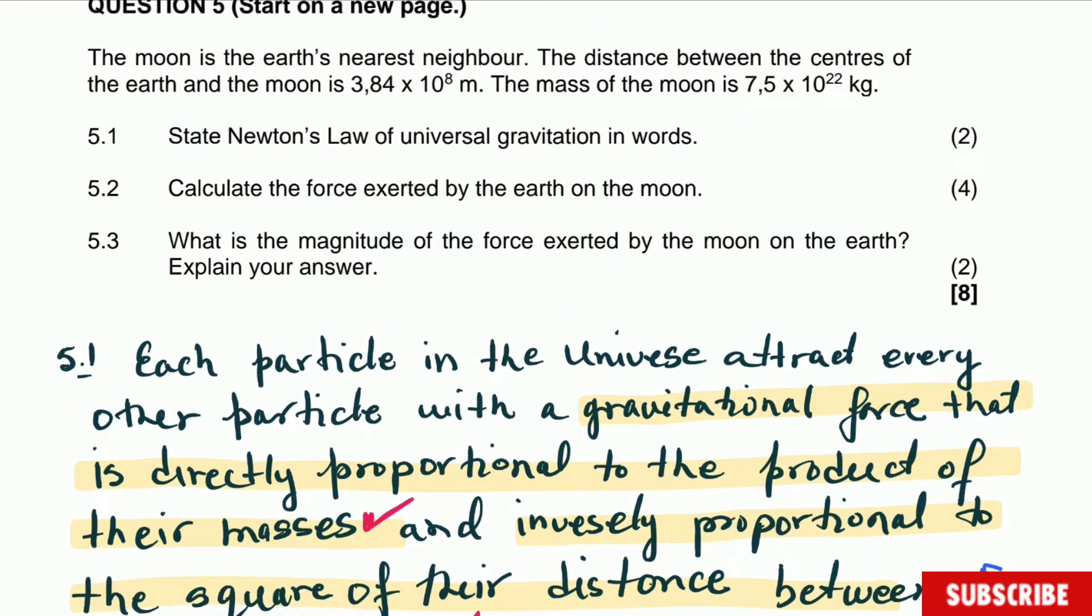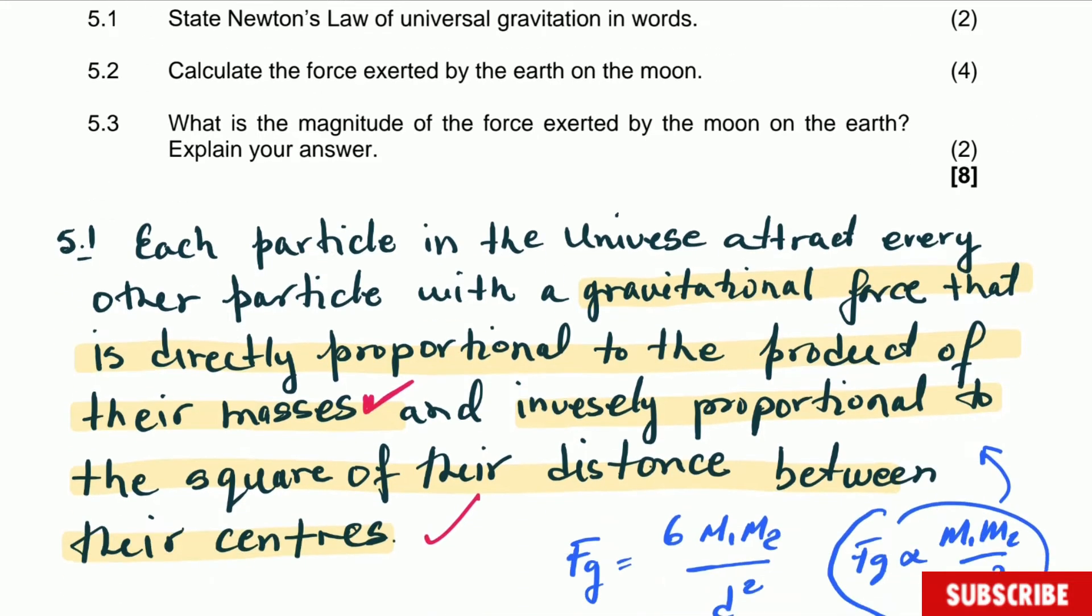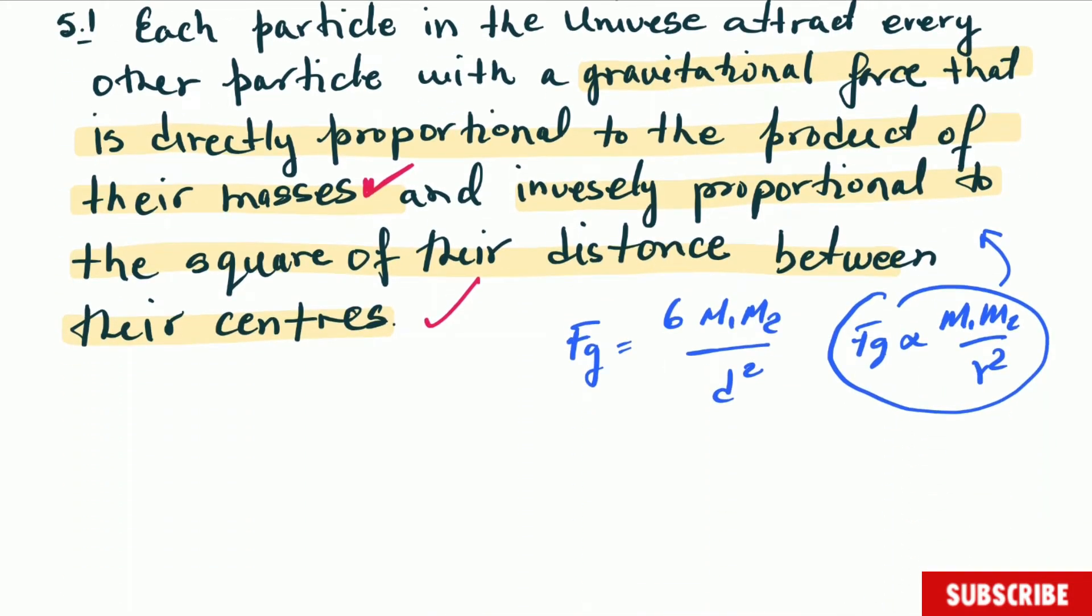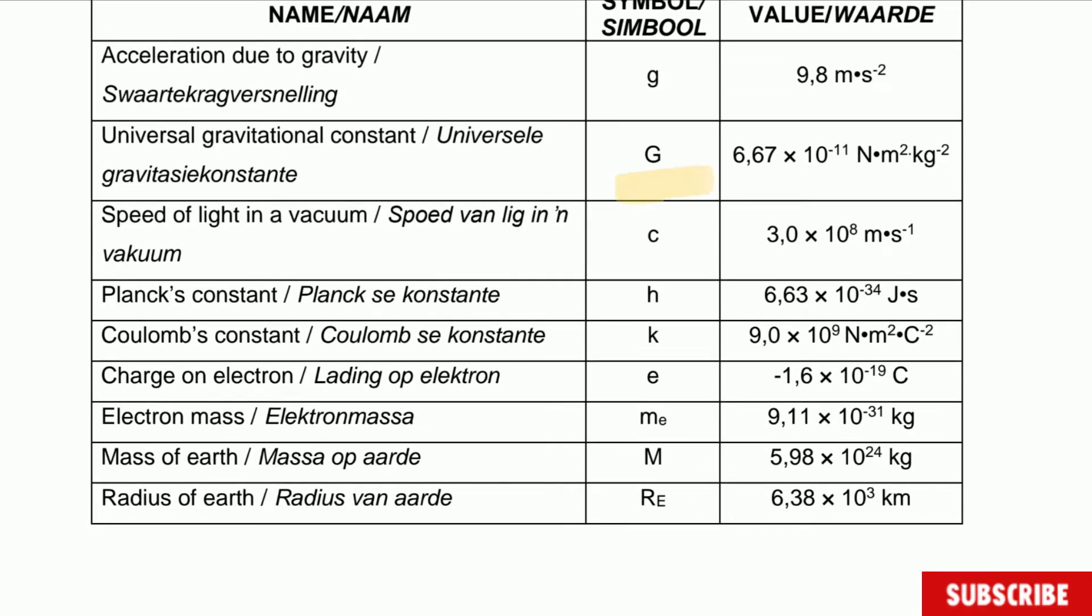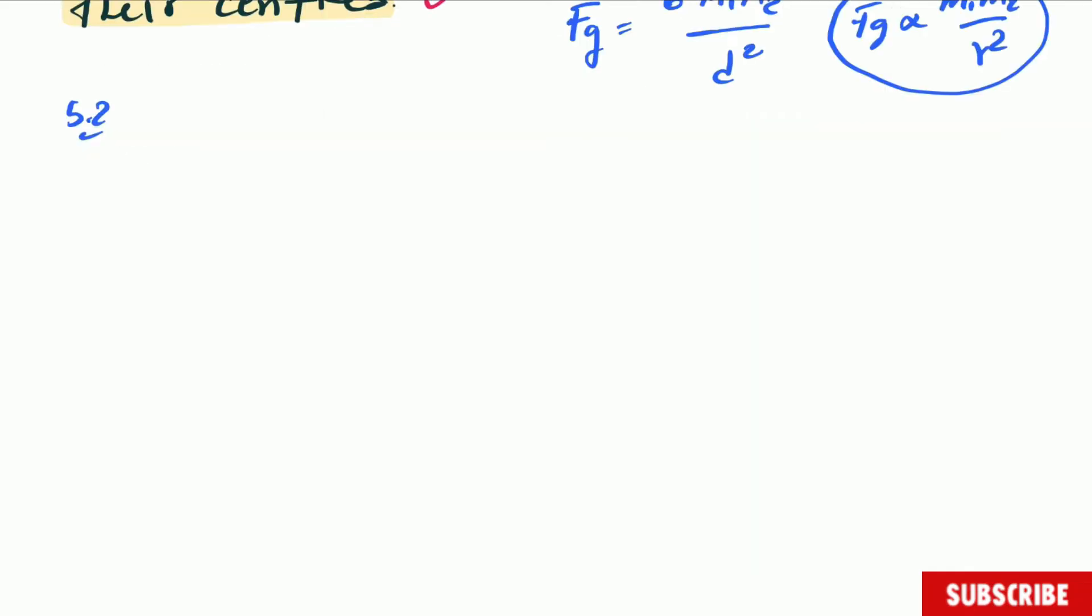Question 5.2, calculate the force exerted by the Earth on the Moon. Guys, we have to look for this formula we just spoke about. So this is question 5.2. And then let's use the formula. The formula is given to you right here in the page of formulas. You can see here the formula for gravitational law. G is a constant, which is also given to you in the table of constants. There it is, G. So please make sure you come here and write it correct.